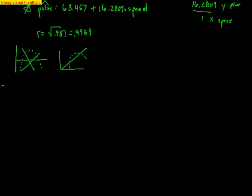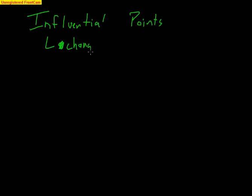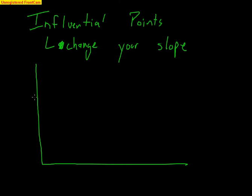The next thing I want to talk about are what we call influential points. Influential points are points that would dramatically change your slope. Now, the thing is, these points are usually kind of hidden, but not really. So, here's all my data points.